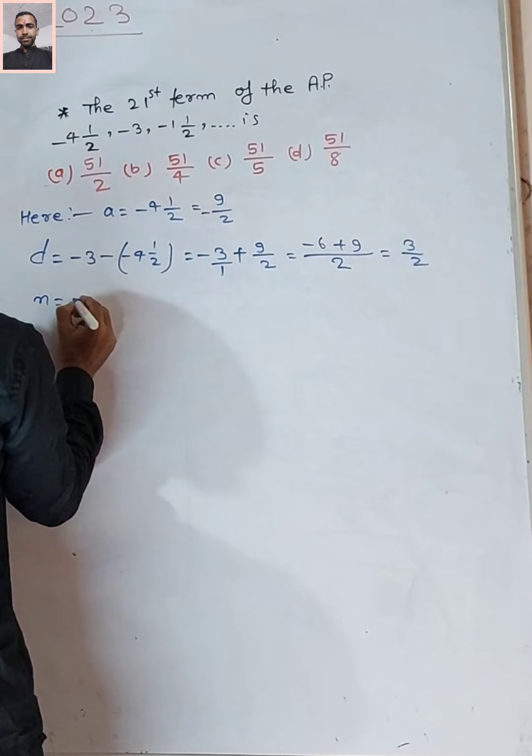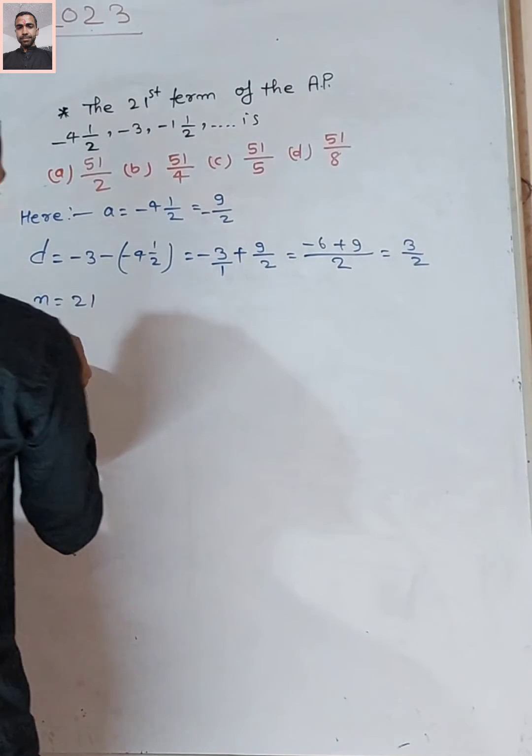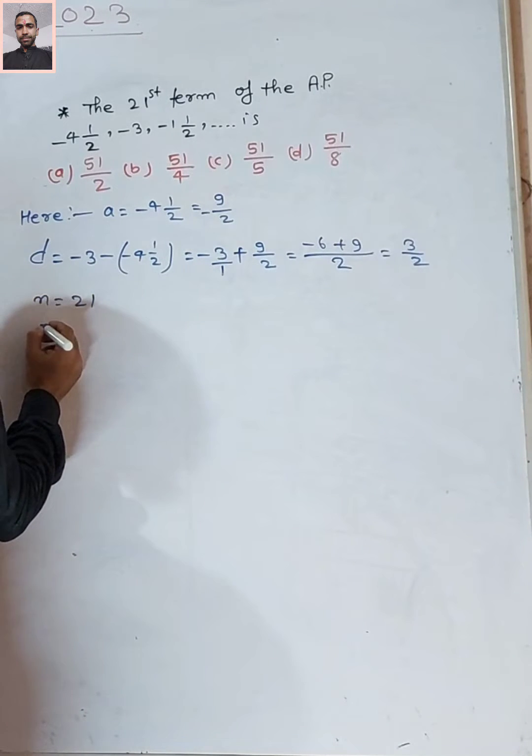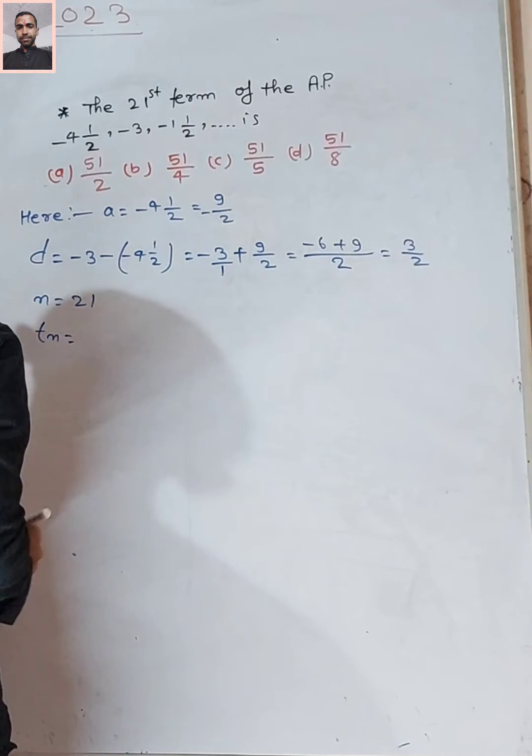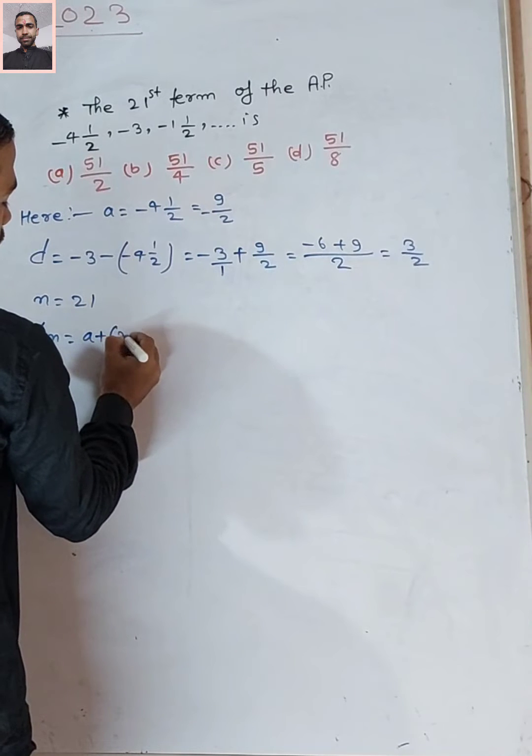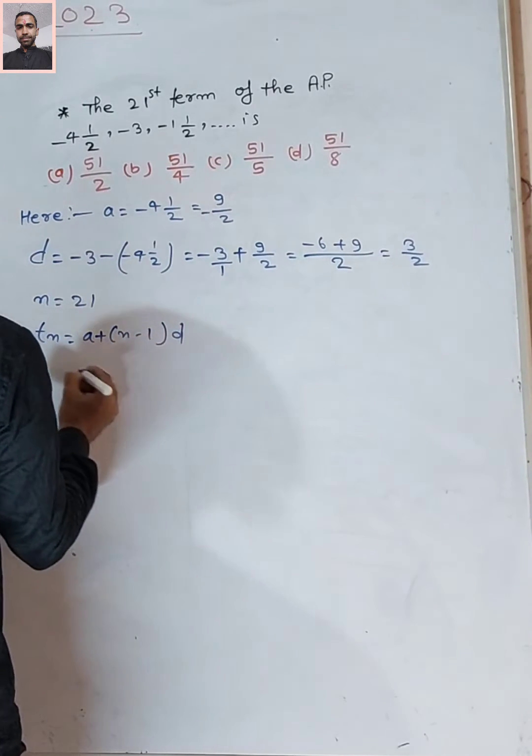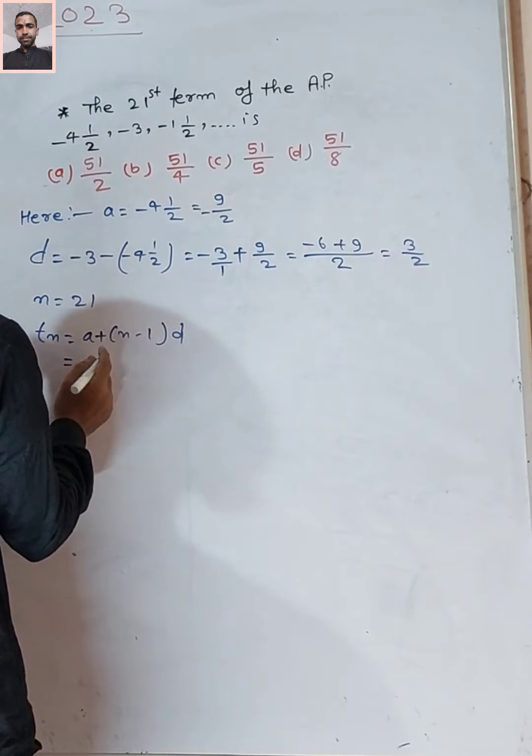The value of n is equal to 21. The nth term of an AP is equal to a + (n-1) × d.